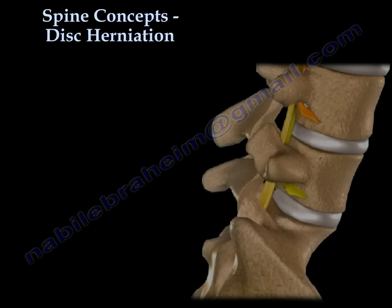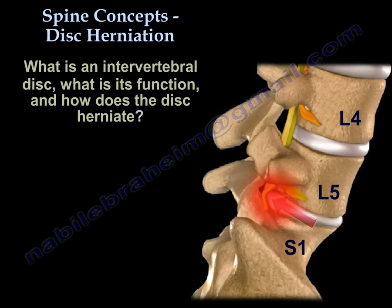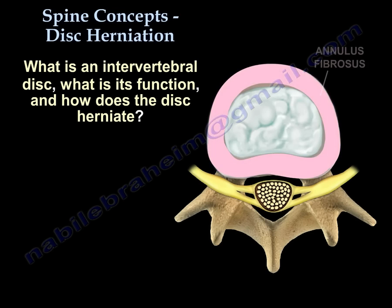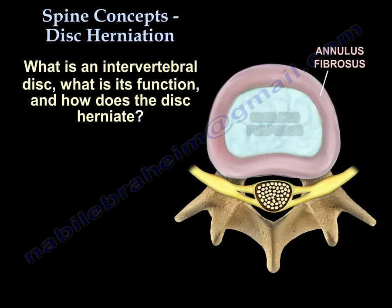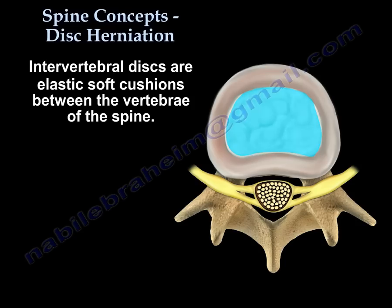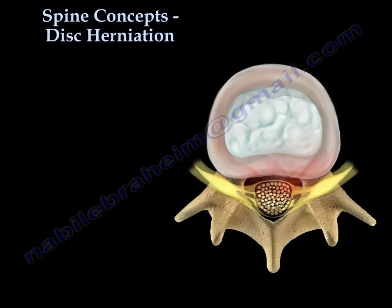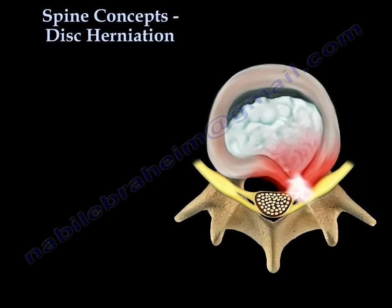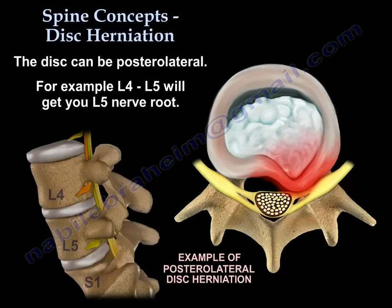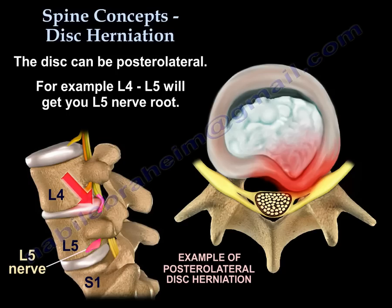How about disc herniation? What is a disc, what is the function of a disc, and how does the disc herniate? The disc is an elastic soft cushion between the vertebrae of the spine. You can see how the disc herniates — it can herniate three ways. One way is posterolateral disc herniation: if you have L4-L5 disc herniation, you will get the L5 nerve root.